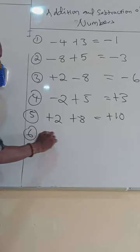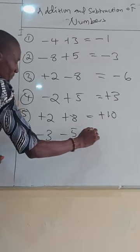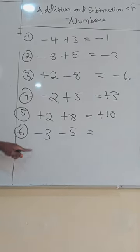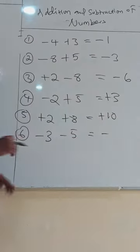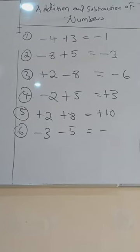Number 6, when you have minus 3 minus 5. The signs are the same. Pick one of the signs and you add the numbers. 3 plus 5 is what?